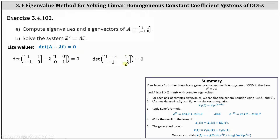Now we evaluate the determinant, which equals one minus lambda times negative lambda minus one times negative one. Simplifying and combining like terms, we have lambda squared minus lambda plus one equals zero.